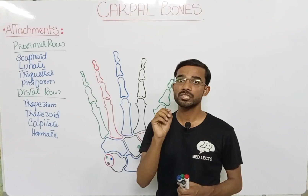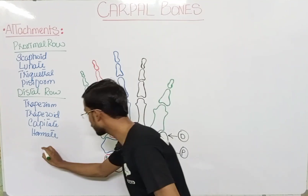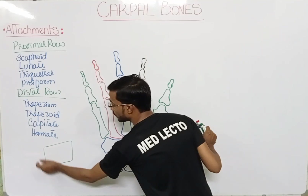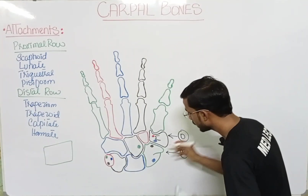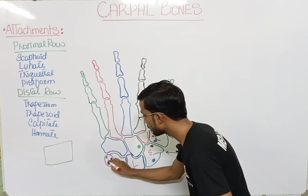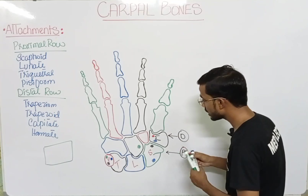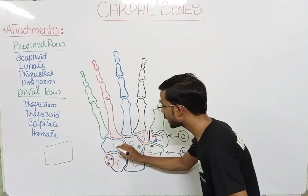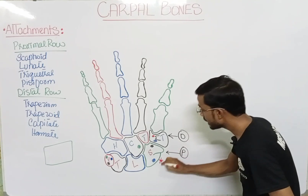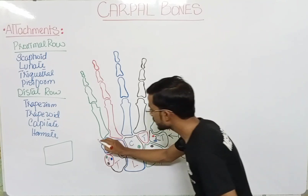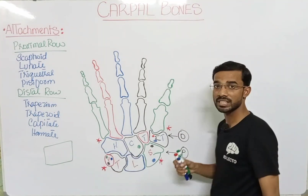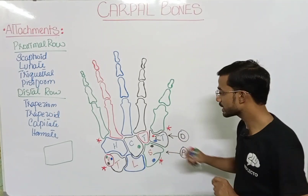Actually, carpal bones form a square, and you will see each attachment will be at the corners of the carpal bones. The corners are: the scaphoid as the first corner, the trapezoid as the second corner, the hamate as the third corner, and the pisiform as the fourth corner. So these are basically the four corners and you will see the different attachments at these four corners. We will discuss them one by one.